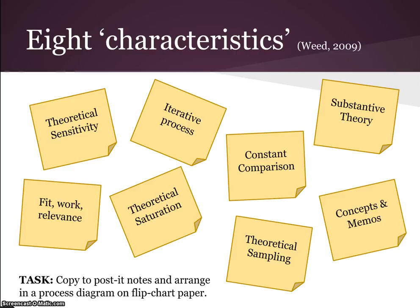This takes us on to an iterative process. Grounded Theory, once you start to sample, is an iterative process of data collection and data analysis. You move between bouts of collecting data, analyzing it, making sense of it, sampling again, then collection and analysis. We go in basic spirals or iterations of collection and analysis.